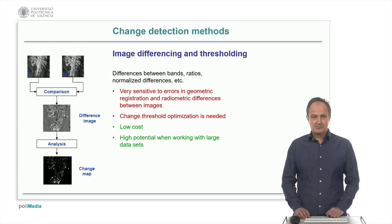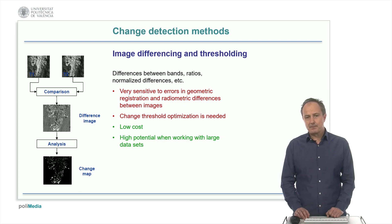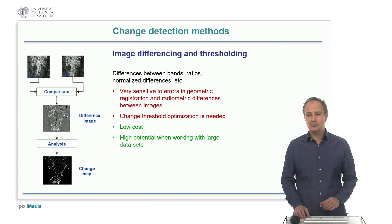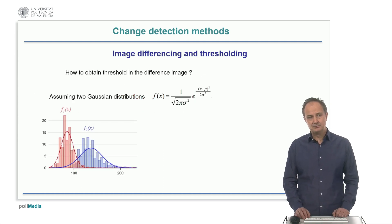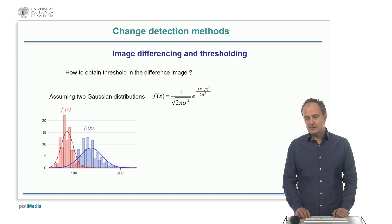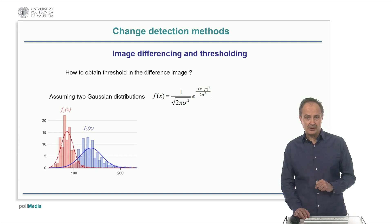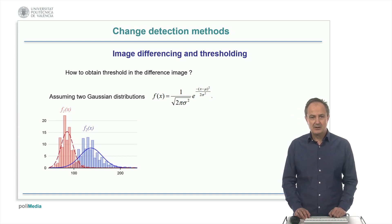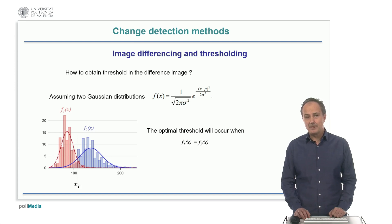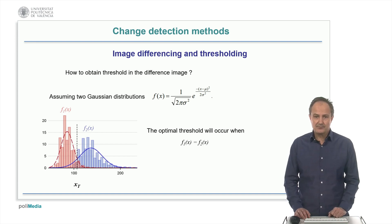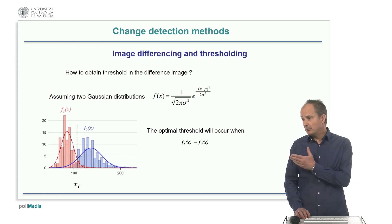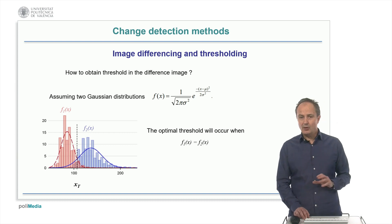Once the noise is reduced, the next step is to apply a change detection method. One of them consists of differencing images, spectral bands, or indices obtained at different dates and finding a threshold of change. This method is very sensitive to errors in geometric and radiometric corrections, but it is easy and fast to apply. The main issue is usually finding the right threshold. An objective approach is to select two samples — one from an unchanged area and one from a changed area — assume they follow normal distributions, and calculate the optimal threshold as the intersection point between both. In this example, the optimal threshold will be around the value of 110.